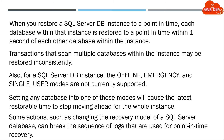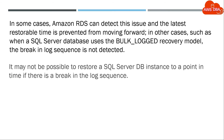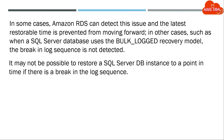Some actions, such as changing the recovery model of a SQL Server database, can break the sequence of logs that are used for point in time recovery. In some cases, Amazon RDS can detect this issue, and the latest restorable time is prevented from moving forward. In other cases, such as when a SQL Server database uses the bulk-logged recovery model, the break in log sequence is not detected. It may not be possible to restore a SQL Server DB instance to a point in time if there is a break in the log sequence.